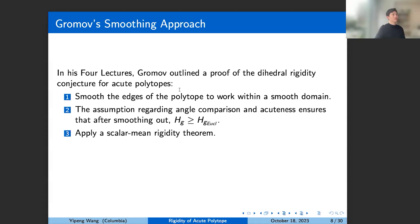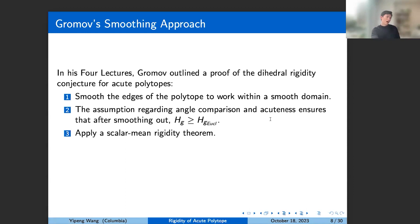In four lectures Gromov outlined a proof of the dihedral rigidity conjecture for acute polytopes. The idea is to smooth out the edges of the polytope so that you can work on a smooth domain. The angle comparison condition together with the acuteness of the polytope ensures that after smoothing, the mean curvature of your polytope is at least the mean curvature with respect to the Euclidean metric, allowing you to apply the scalar-mean rigidity theorem of Xi and Tam.